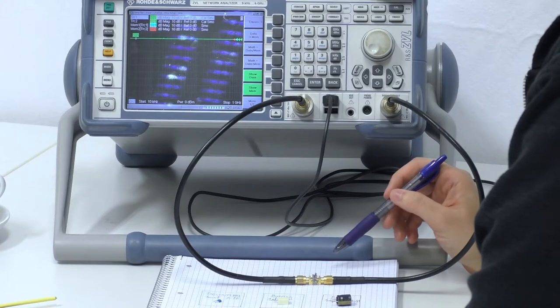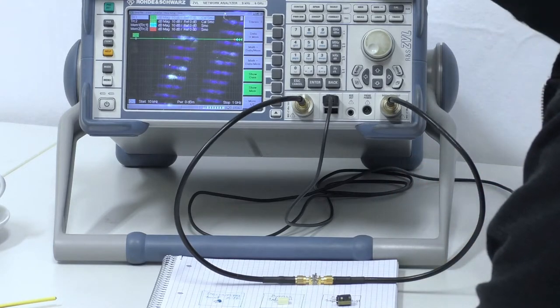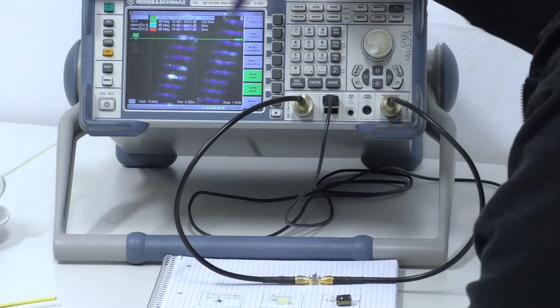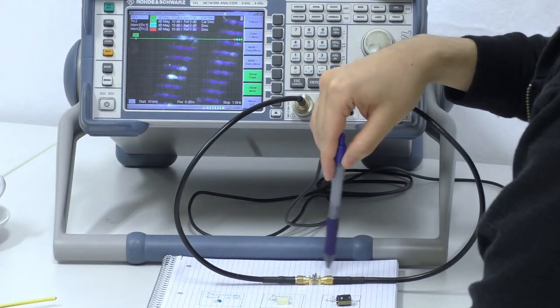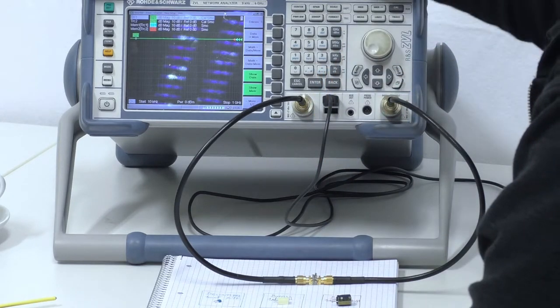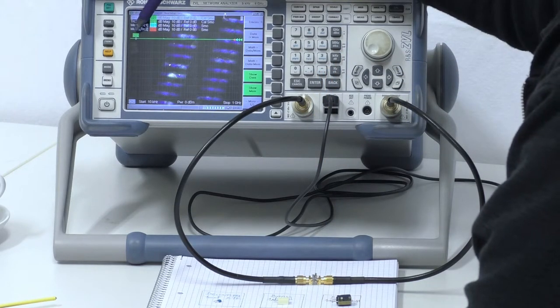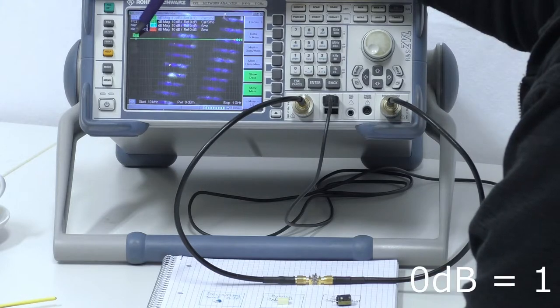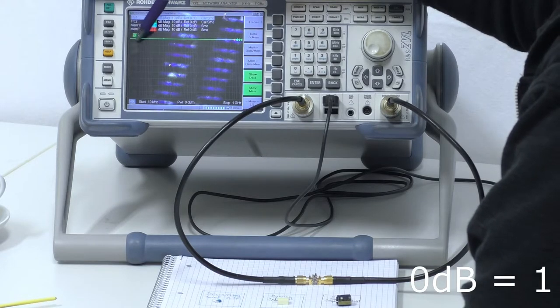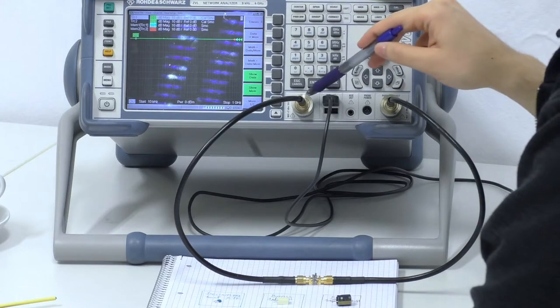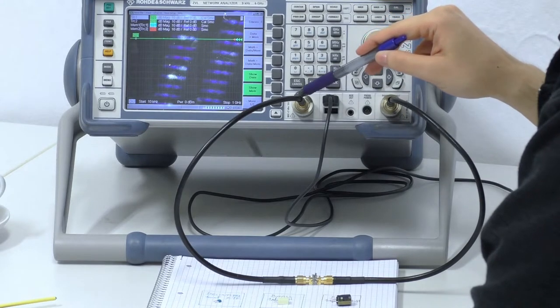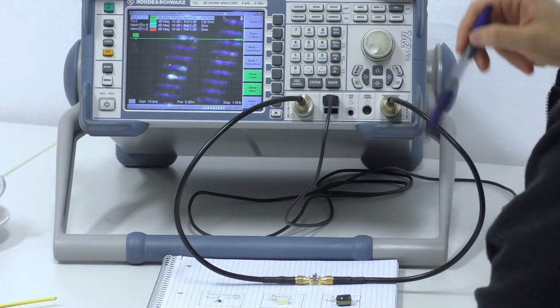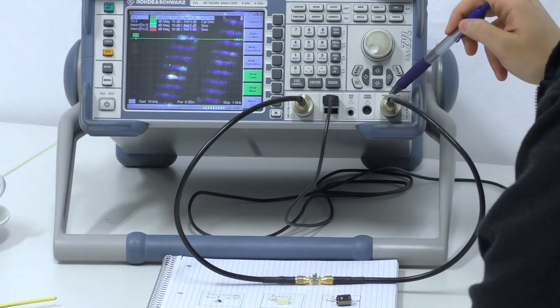Now let's start with the measurements. So before we are placing any component here on our test measurement setup, we can see that our network analyzer shows us an S21 parameter of 0 decibels, which is equal to the value 1. Which means that all the power which is driven here on port 1 is received here on port 2.